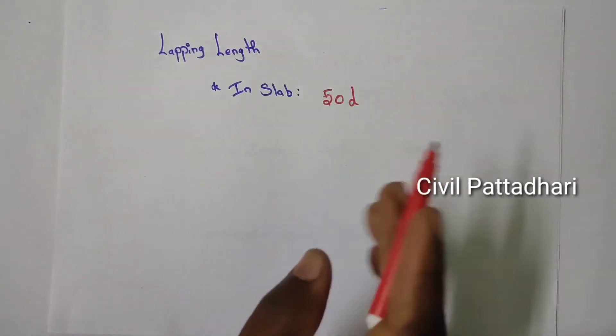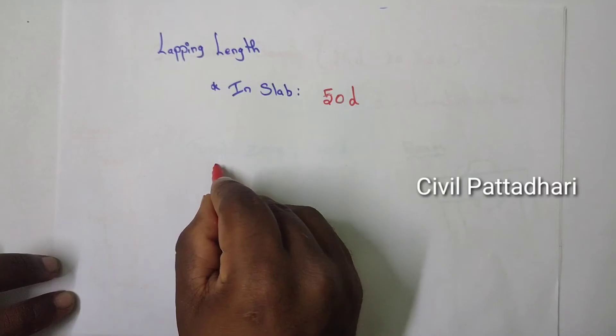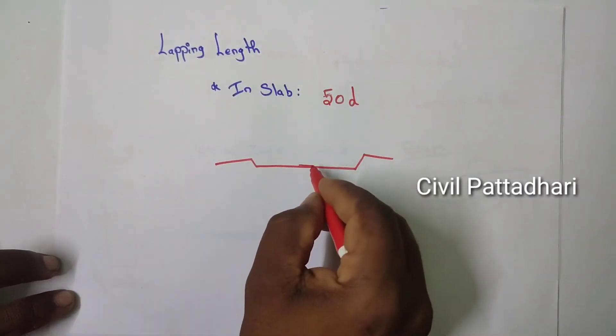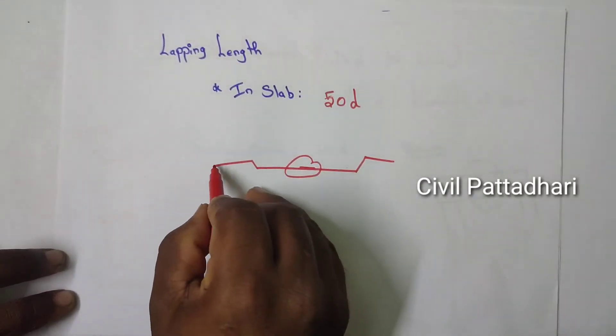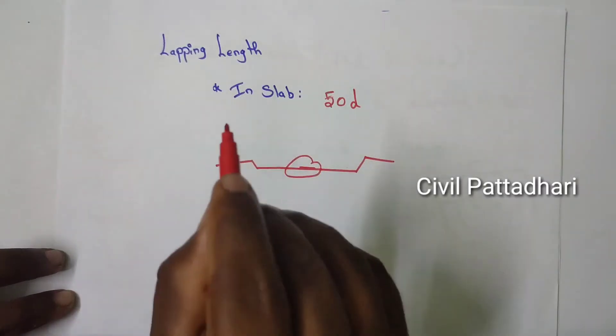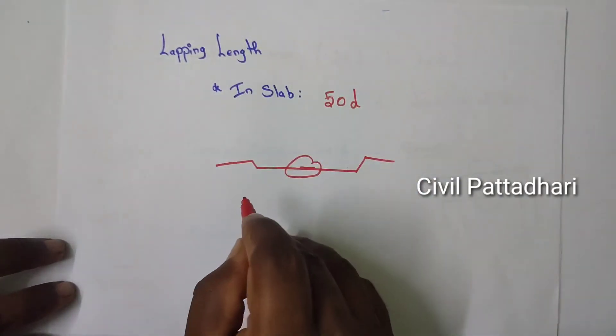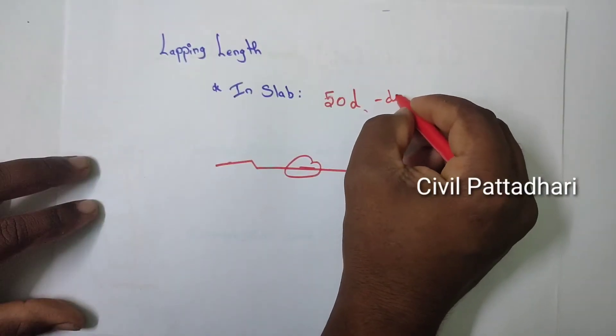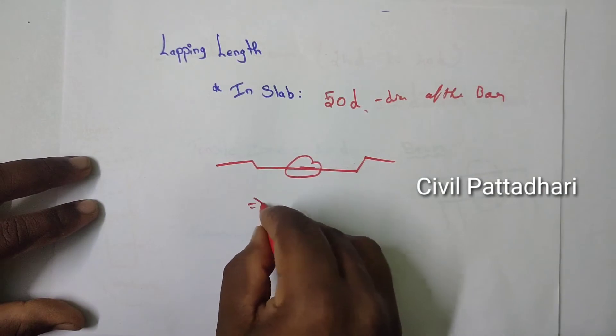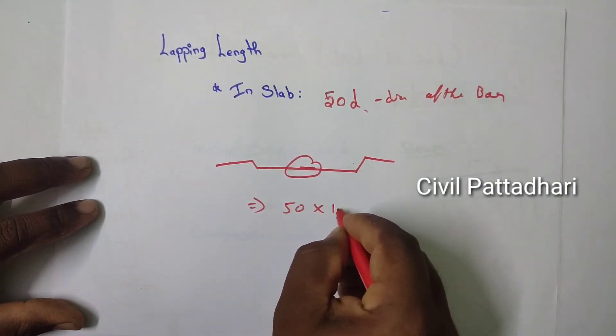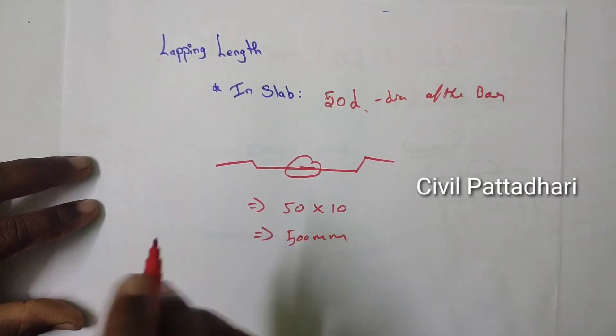The lapping is made on beam, column, and slab. First we are going to see about the slab. In slab, the lapping is made over this type. Here lapping does not be done in the mid of the span. Instead, the lapping is done on the edges. The formula for the lapping length of the bar is 50 times d, where d means the diameter of the bar. Here, if the diameter of the bar is 10, then the lapping length is 500 mm.